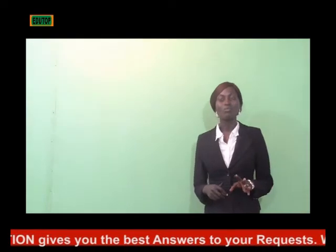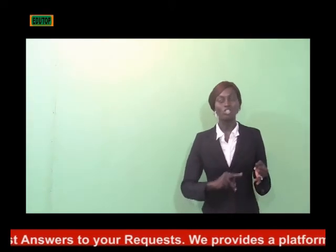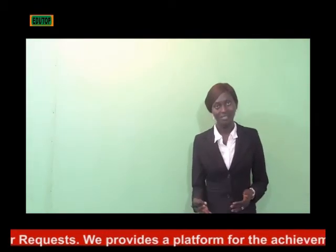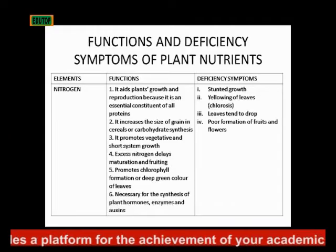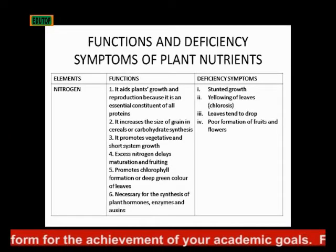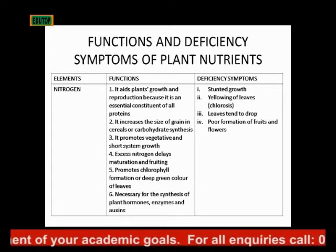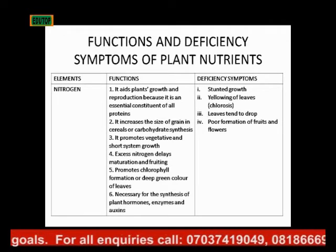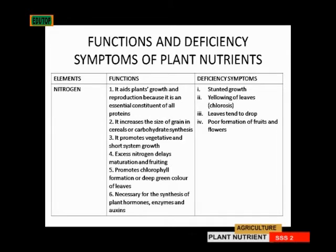For each of these elements, we'll be looking at their functions — what does it do? When it is absent or in excess, what effect does it have on your crops? The first element we'll look at is nitrogen. It aids plant growth and reproduction because it is an essential constituent of all proteins. That is how important it is as a macroelement.